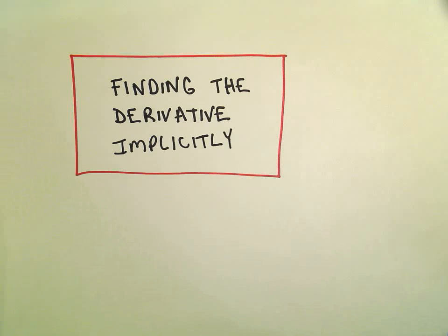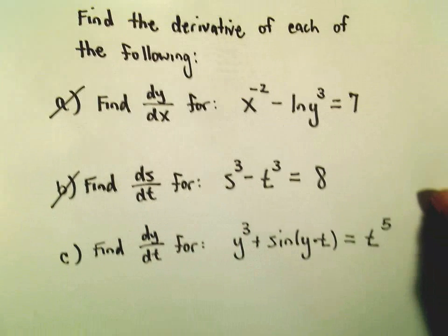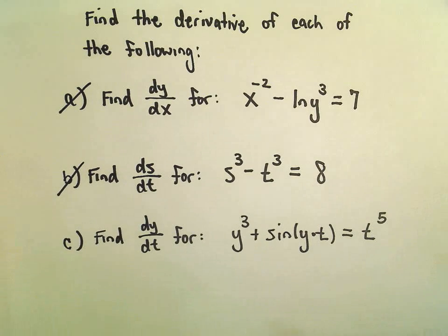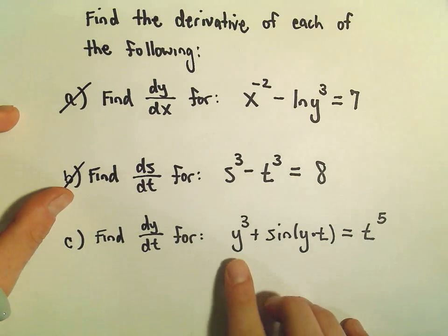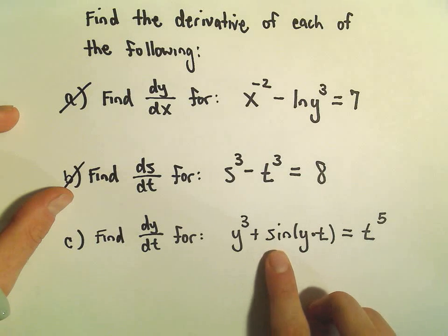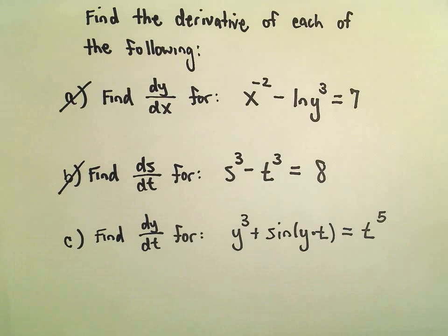Okay, so just one more example here of finding a derivative using implicit differentiation. So here we're going to find the derivative. We're going to find dy/dt of y cubed plus sine of y times t equals t to the fifth.